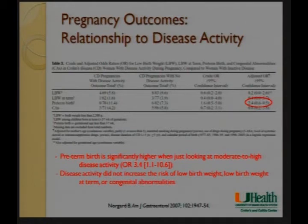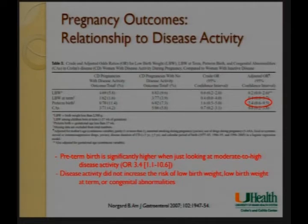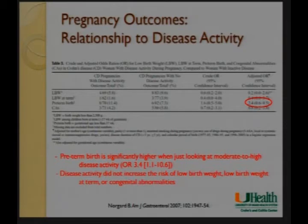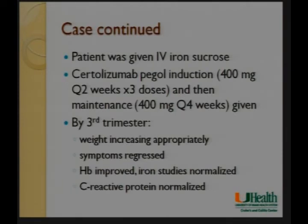Importantly, most of that risk is probably related to disease activity. Looking at odds ratios for low birth weight, low birth weight at term, preterm birth, and congenital abnormalities in Crohn's patients compared to women with no active disease, there were really no statistically significant odds ratios for inactive disease. But preterm birth was significantly increased in those with moderate to high disease activity. Disease activity did not increase the risk of low birth weight or congenital abnormality — it's disease activity that is probably driving preterm birth.